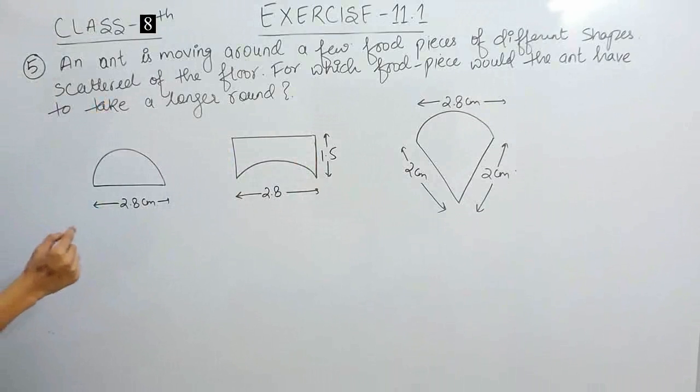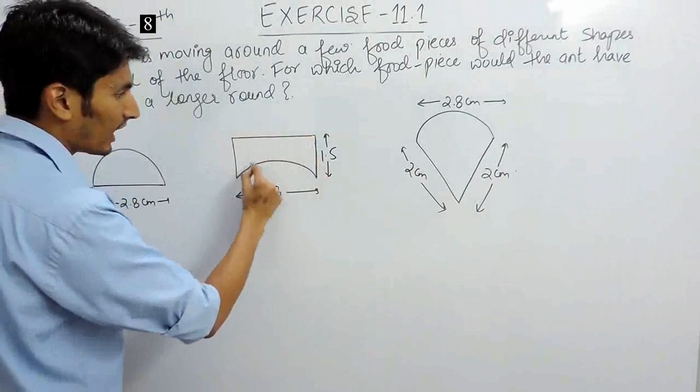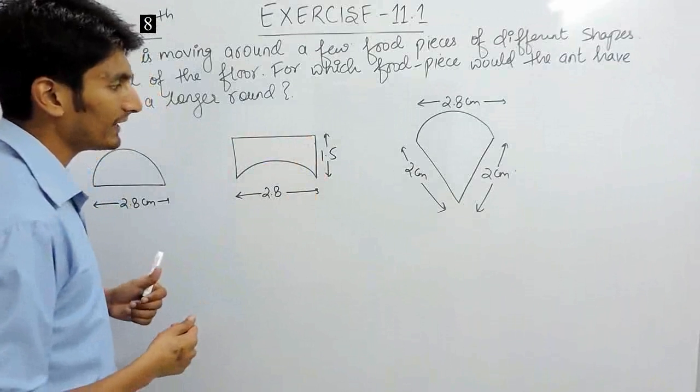If you want to find the distance clearly, we have to find the length of these outer boundaries. In other words, these outer boundaries are known as perimeters.